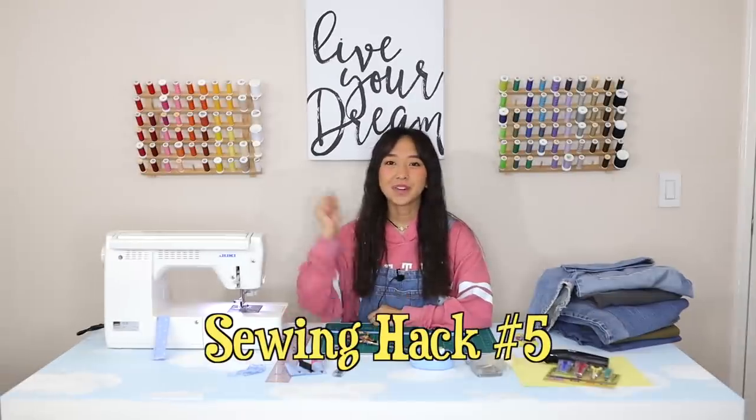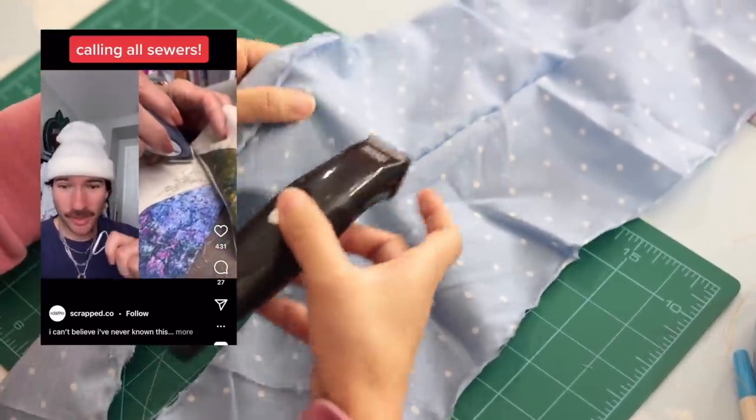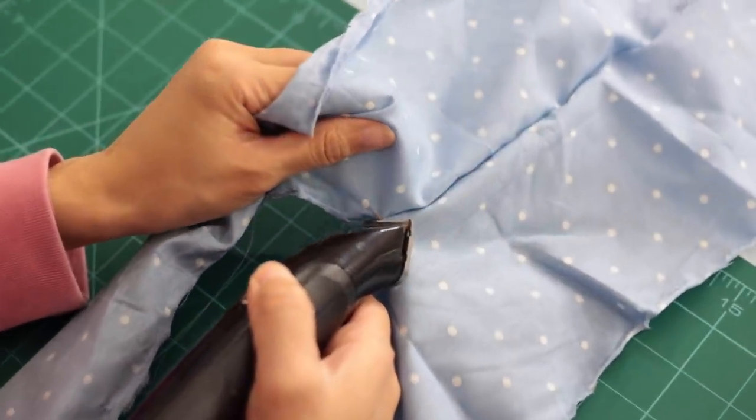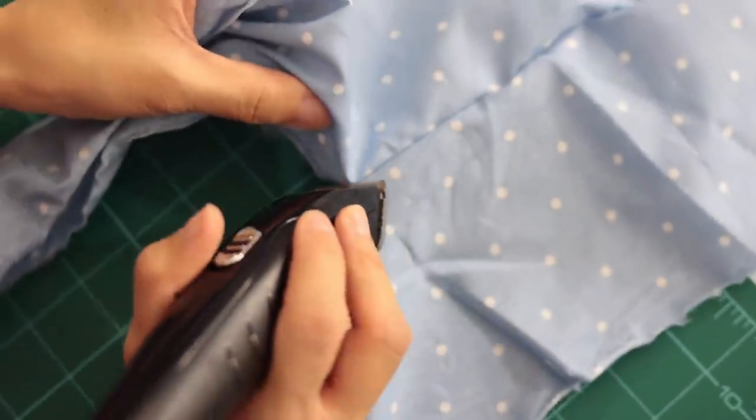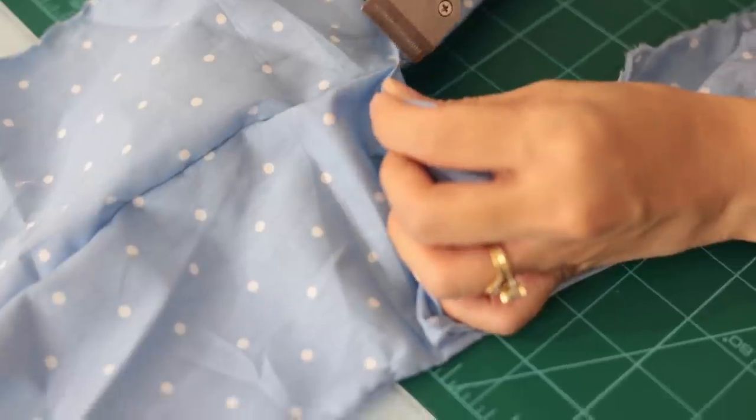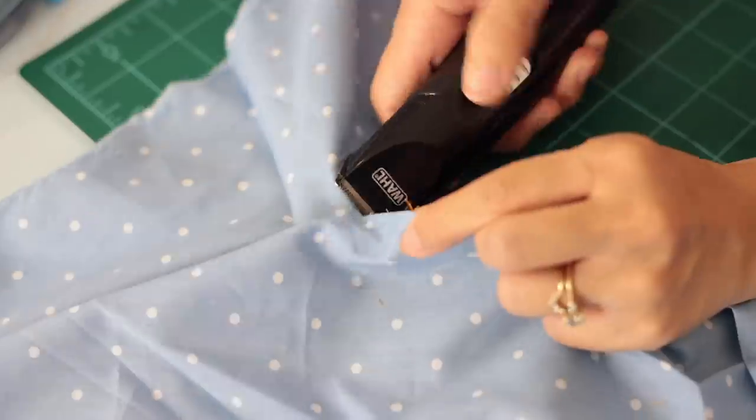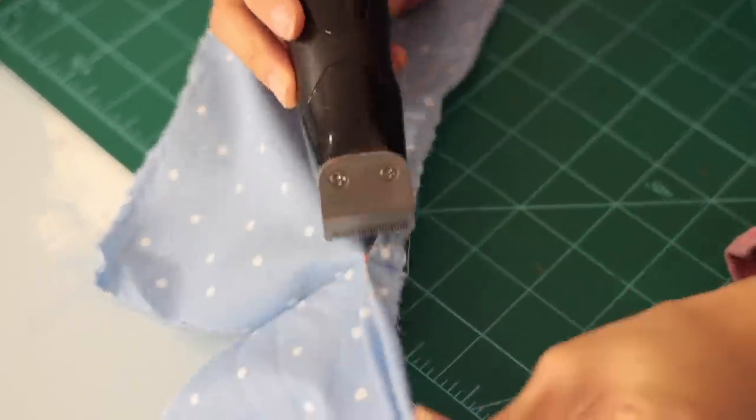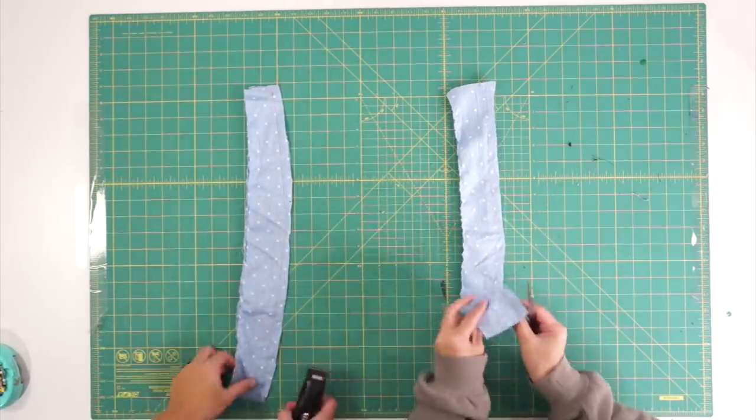Sewing hack number five: I saw on Instagram that someone used men's clippers as an electric seam ripper, so let's try it out. So I'm going to turn it on and then—oh there it goes! They actually do sell electric seam rippers for sewing, but if I'm being honest, I never knew that existed or seen it used before. I was curious to see if it would tear my fabric and it didn't, but definitely test it out on your scraps before using.